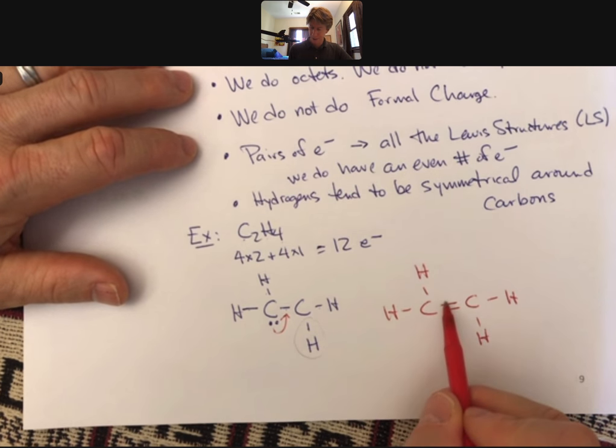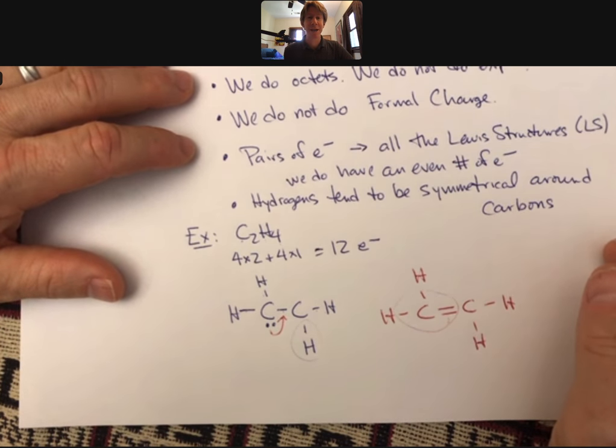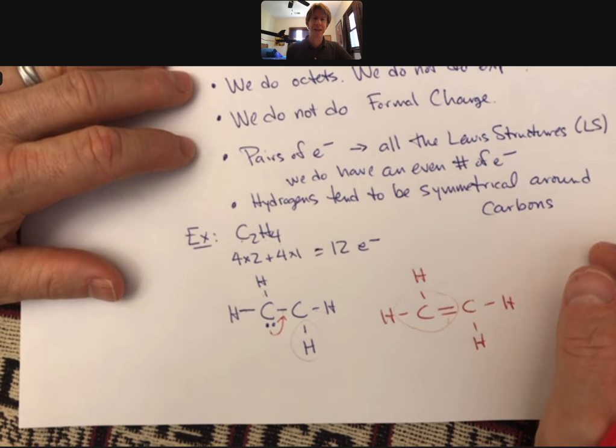And then form a double bond that leaves us with a double bond between them. Now, if you look, each of these carbons has eight electrons, two, four, six, eight, this carbon, two, four, six, eight, and all of the hydrogens are happy as well. By happy, I mean they have their duet. And they are happy.